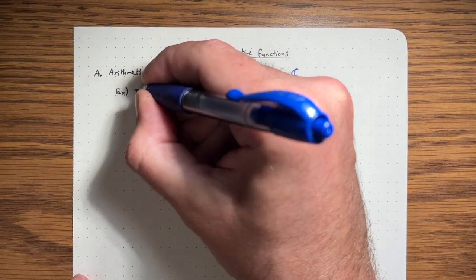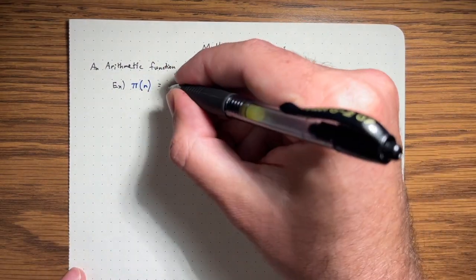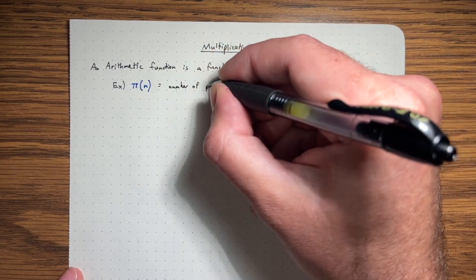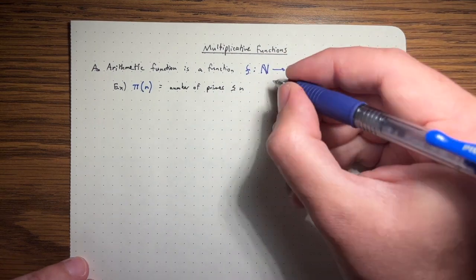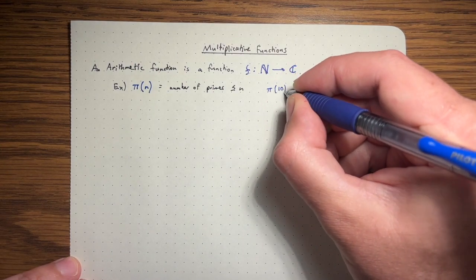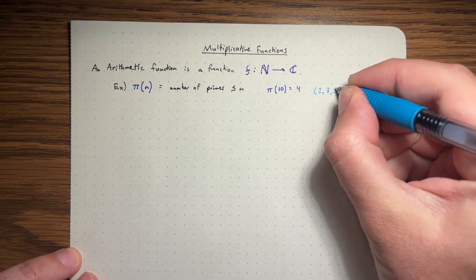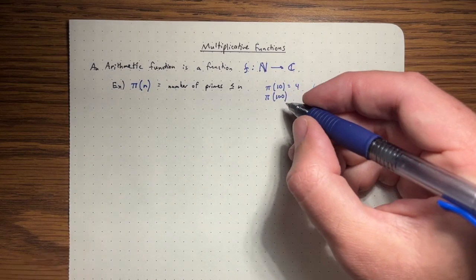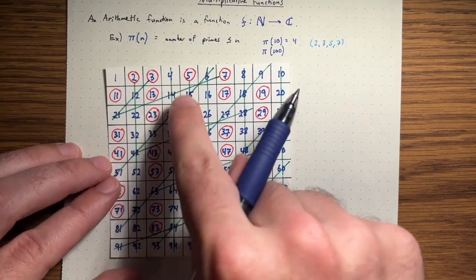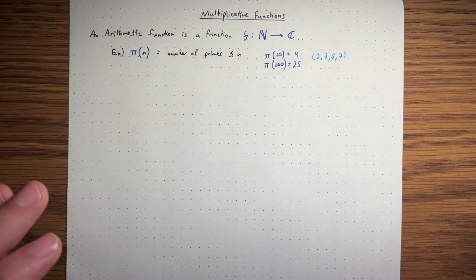One example is a really important function in number theory called pi. Pi of n is defined as the number of primes up to and including n. For example, pi of 10 is 4 because we have the primes 2, 3, 5, 7. And pi of 100, if you count all the primes up to 100, you should get 25.